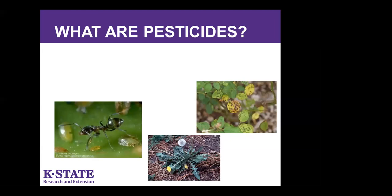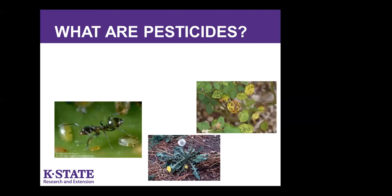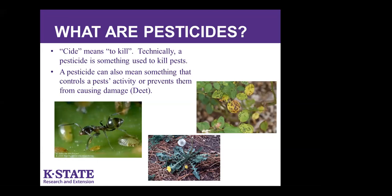What are pesticides? The suffix '-cide' means to kill, so basically it's any product that will kill or control a pest — or it could also be a product that repels a pest. We commonly go out in the evening and put on some DEET to repel mosquitoes, so that would be an example of a product to repel.